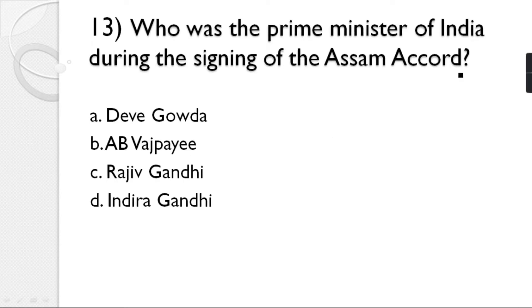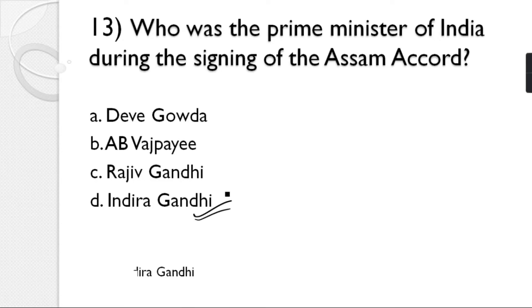Question number 13: Who was the Prime Minister of India during the signing of the Assam Accord? Options: Deve Gowda, A.B. Vajpayee, Rajiv Gandhi, Indira Gandhi. The correct answer is option D — Indira Gandhi.